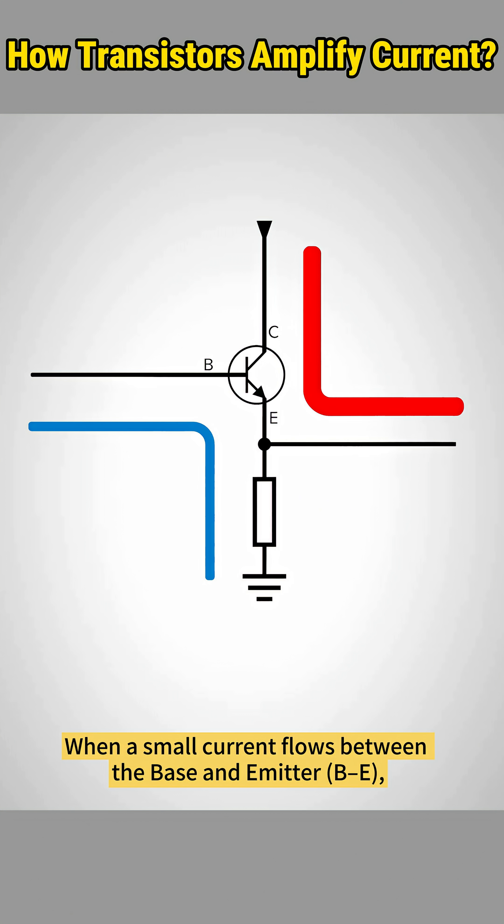When a small current flows between the base and emitter, it allows a larger current to flow between the collector and emitter. That's current amplification.